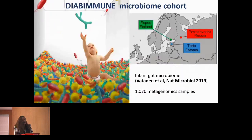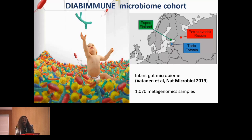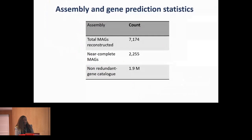To understand how these functions work, I analyzed data from the DIABIMMUNE Microbiome Cohort — infant gut microbiome data collected from Northern and Eastern Europe: Finland, Estonia, and Russia. I aggregated around 1,000 metagenome samples. From this data, we constructed around 7,000 MAGs, of which 2,000 were high-quality MAGs with greater than 90% completeness and less than 5% contamination. The non-redundant gene catalog consisted of 1.9 million genes.